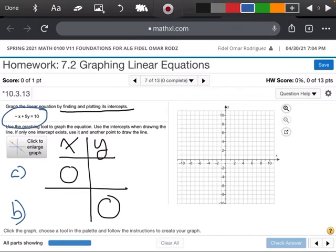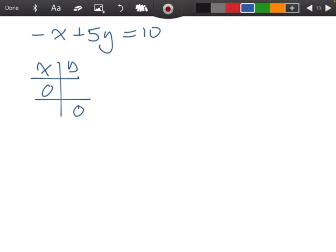Here's my equation: negative x plus 5y equals 10. I'm going to do it over here, negative x plus 5y equals 10, and we're making this table. I said this was part A and this was part B, so let's do part A.